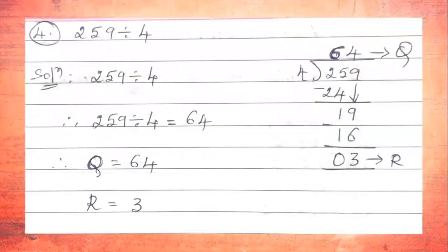The fourth problem: the given number is 259 divided by 4. We write the solution: 259 ÷ 4. The division is shown in the rough column to the right side. Here the divisor is 4 and the dividend is 259. We have to find the remainder and quotient. The divisor is 4, so we read the 4-times table, taking the first two digits, 25.